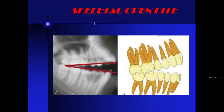Skeletal open bite is due to disproportionate jaw growth, mainly in the maxilla. Maxillary growth in the posterior region is more compared to the anterior region. The vertical growth of the maxilla in the posterior region causes a tipping in the downward direction, while anterior vertical maxillary growth is less, giving the upper incisors a look of intrusion. So posterior maxillary vertical growth being greater than anterior leads to skeletal open bite.